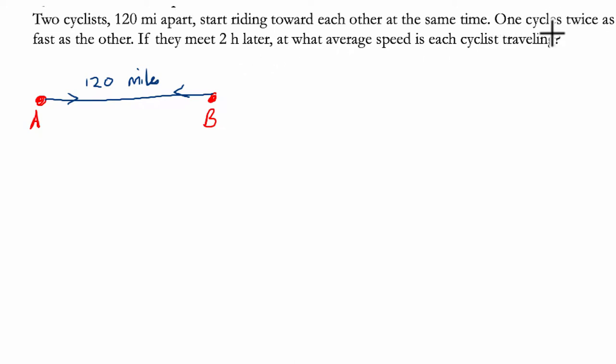So one cycles twice as fast as the other and we know if they meet two hours later, at what average speed is each cyclist traveling? So one is faster than the other. Let's just say A is the faster cyclist. So A is faster. This means, of course,